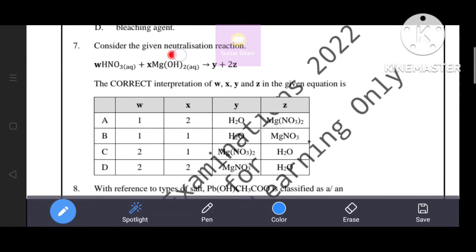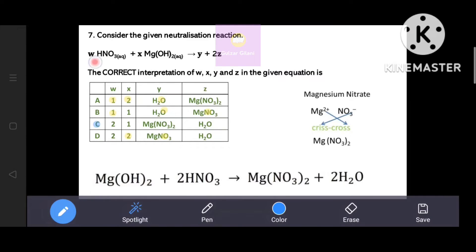Next question. Consider the given neutralization reaction: W HNO3(aq) plus X Mg(OH)2(aq) react to form Y plus 2Z. The correct interpretation of W, X, Y and Z in the given equation... Nitric acid is acid, magnesium hydroxide is base. When acid reacts with base, it forms salt and water. The salt formula is magnesium nitrate.